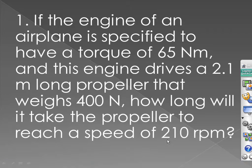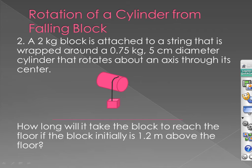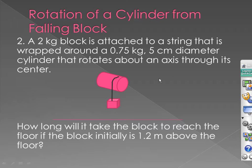The second problem involves rotation, but here we have a cylinder that rotates about an axis through its center. As a result of a falling block attached to a string, and as the string unwraps — imagine the string is wrapped around the cylinder — it unwraps and rotates the cylinder as the mass falls to the floor. We're told a 2 kilogram block, 3 quarters of a kilogram cylinder, 5 centimeters in diameter. That information allows us to calculate the moment of inertia of the cylinder.